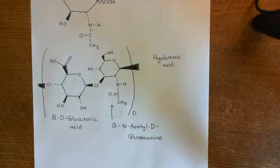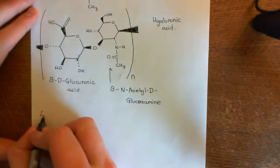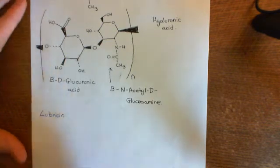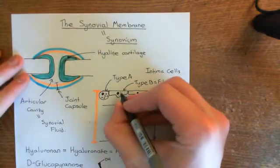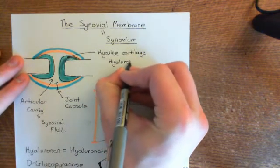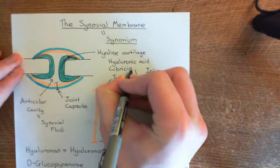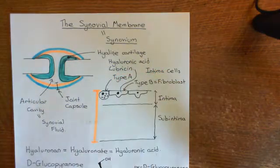This is what the type B synovial intima cells are secreting. Another thing they're secreting is a molecule called lubricin. We won't discuss lubricin in the same level of detail as hyaluronic acid. So they're also secreting lubricin, which is another molecule that helps lubricate the joint. Both hyaluronic acid and lubricin are key components of the synovial fluid and help lubricate the two joint surfaces so they can move over one another more easily.